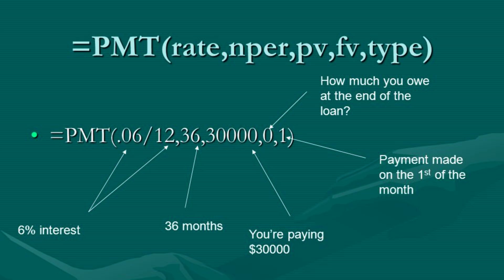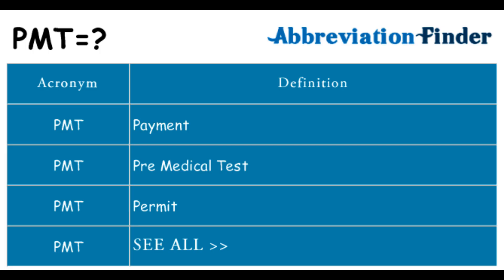How to use the PMT formula: The PMT formula is used to calculate the regular payments required to pay off a loan or achieve a particular investment goal. The formula requires three inputs: the interest rate, the number of periods, and the present value. The interest rate is expressed as a percentage per period, typically per year. For example, if the annual interest rate is five percent, then the interest rate per period would be five percent divided by twelve, which equals 0.4167 percent, if the loan is being calculated on a monthly basis.